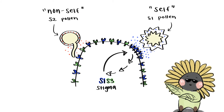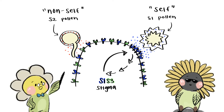Here you can see a stigma with receptors color-coded based on the variant of their S-locus: blue for S1 and green for S3. When it encounters a pollen grain that expresses an S1 allele, it is considered a self-pollen. When this pollen attaches and releases its SCR proteins on the surface of the stigma, it binds to the extracellular domain of SRK, activates the receptor, and causes a signal transduction pathway that leads to inhibition of the self-pollen. On the other side, you can see an S2 pollen, which is considered a non-self pollen.